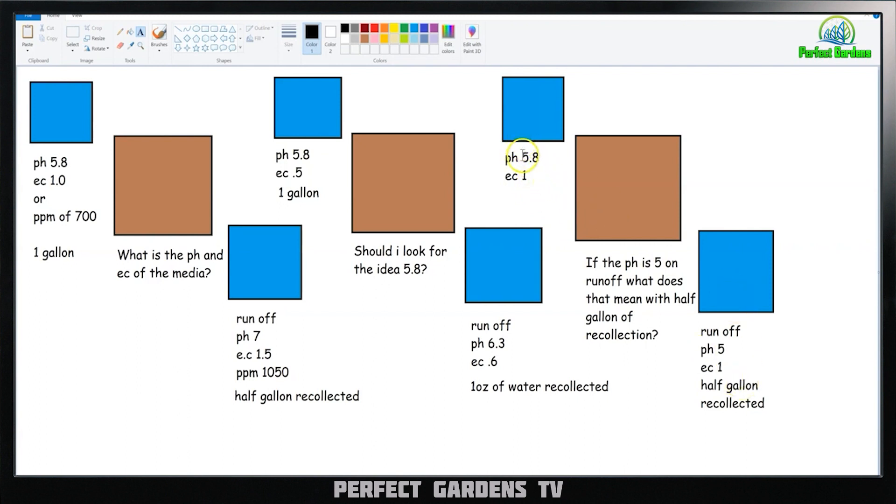So what we're probably going to want to do on our next gallon is add the same amount of nutrients, do exactly what you did, but probably increase your nutrients to 6.5, 6.8, and then go ahead and feed your plants. And what you're looking for is that your runoff to be, once again, at least 5.8 to 6.3, and your EC once again being a reflection of what you're feeding.